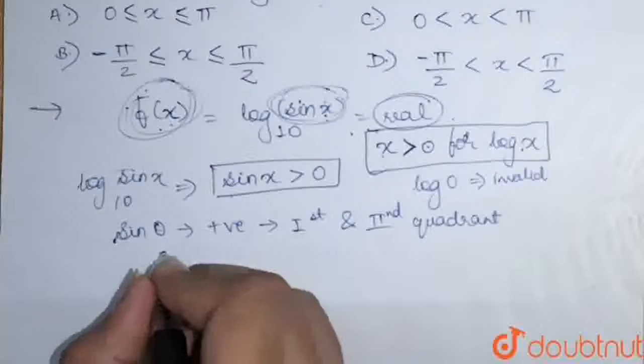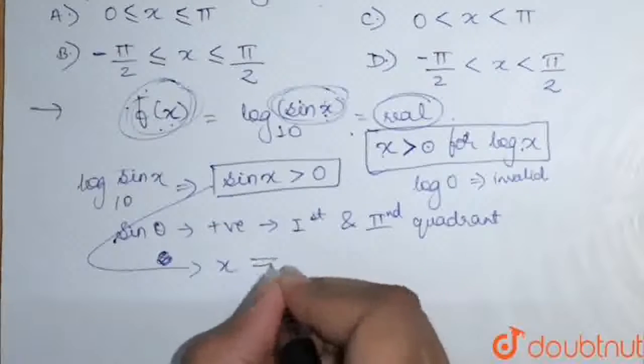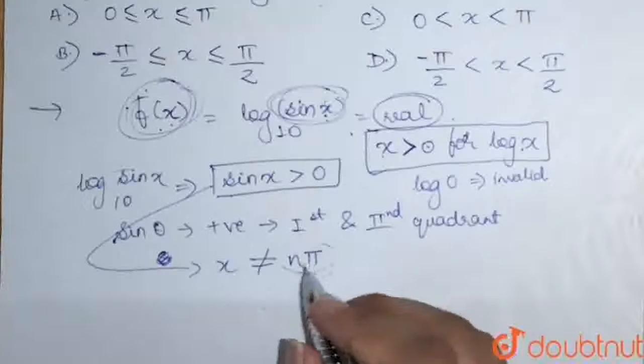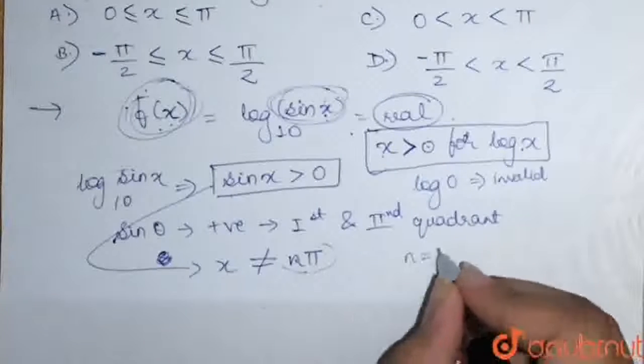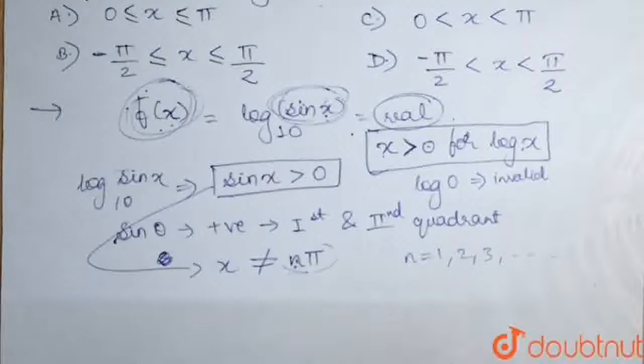So it should not be equal to, x should not be equal to nπ. Because on nπ, sin x is equal to 0. And n can have any value 1, 2, 3, and so on. So it should not be nπ.